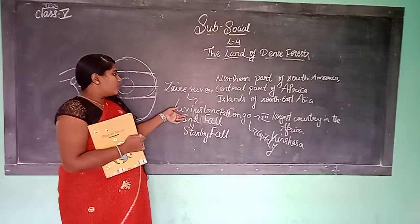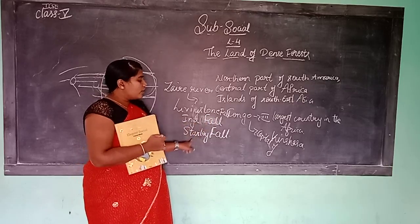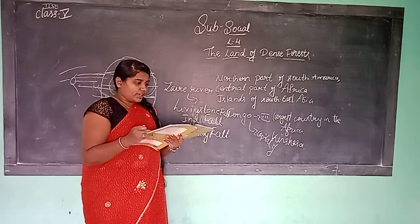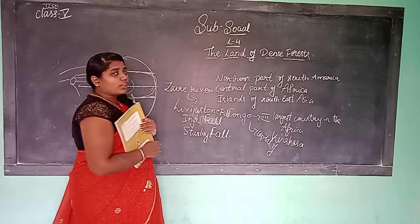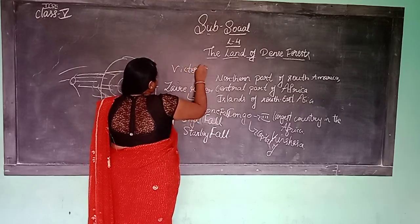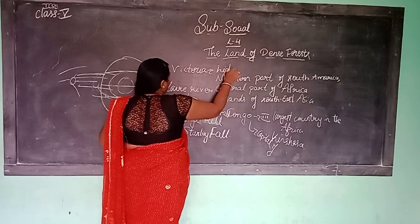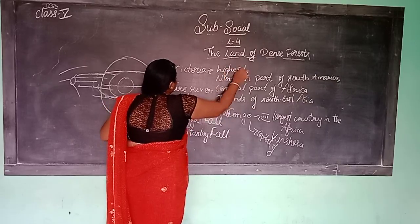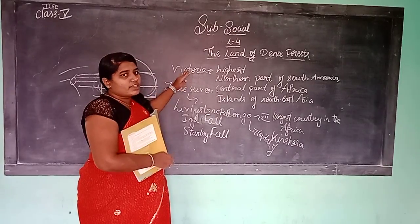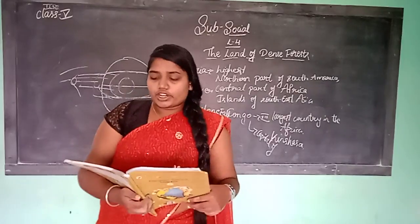The waterfalls in the Congo region include Livingstone Falls, Hinder Falls, and Stanley Falls. The highest waterfall in the Congo region is Victoria Falls.